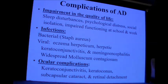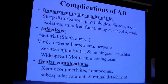Complications of atopic dermatitis include most importantly impairment in quality of life — sleep disturbances, psychological distress, social isolation, and impaired functioning at school and work. Children may also be complicated by infections, especially bacterial Staph aureus, and viral infections like eczema herpeticum, which is generalized herpes simplex viral infection of the body in atopic children and infants.